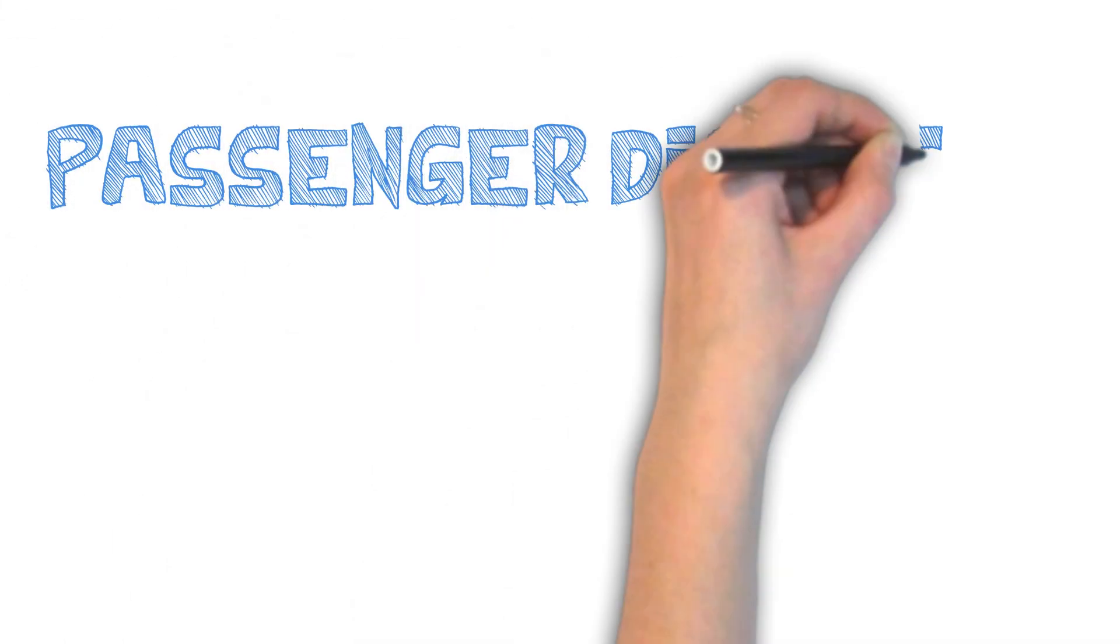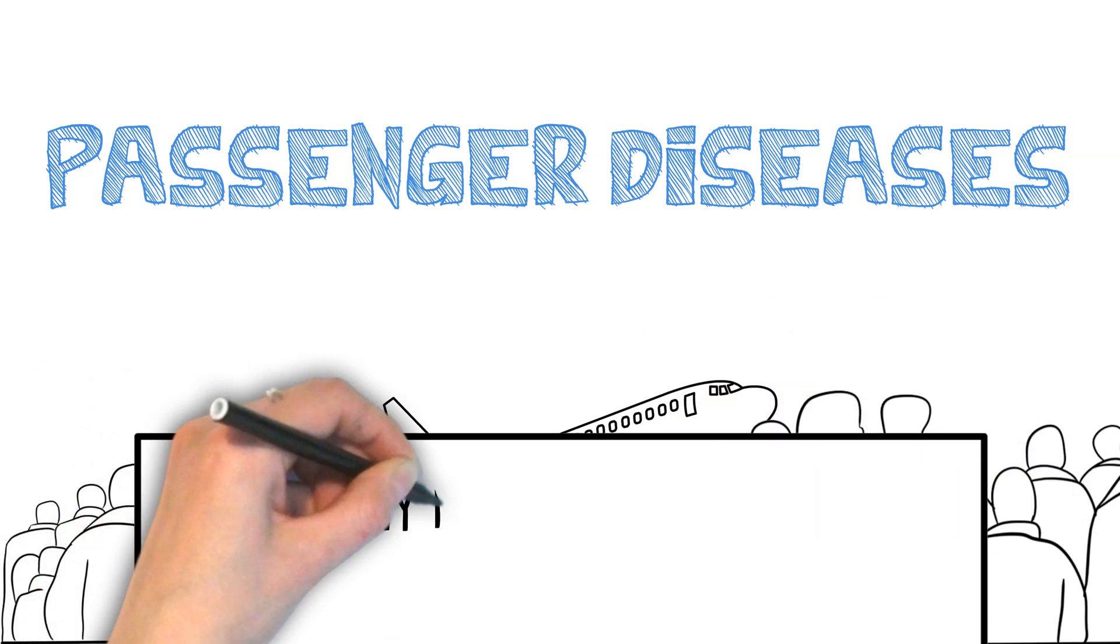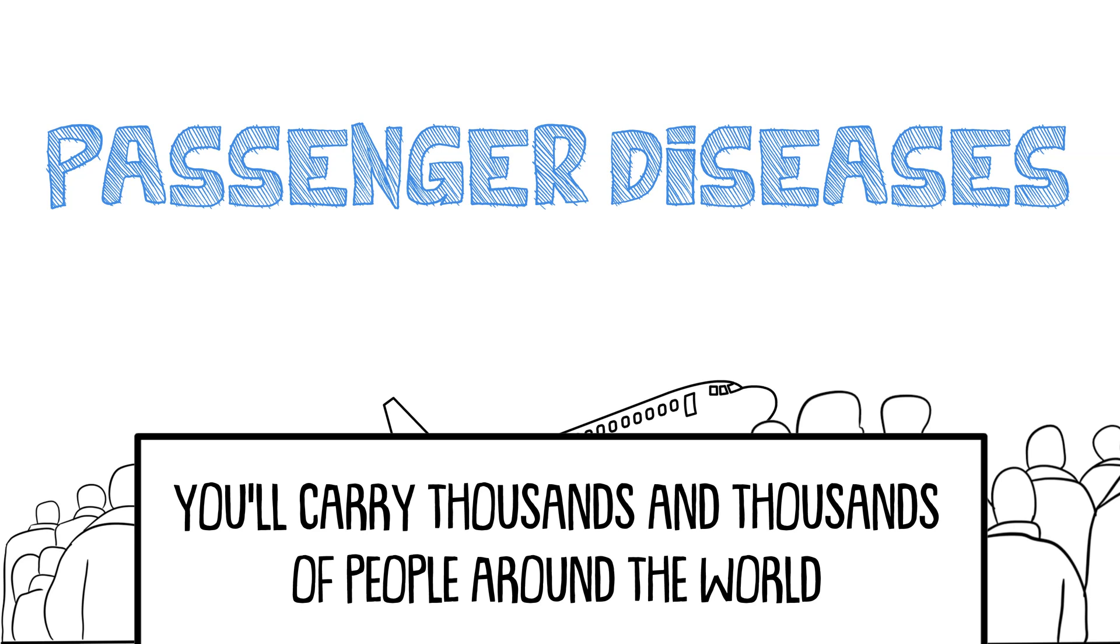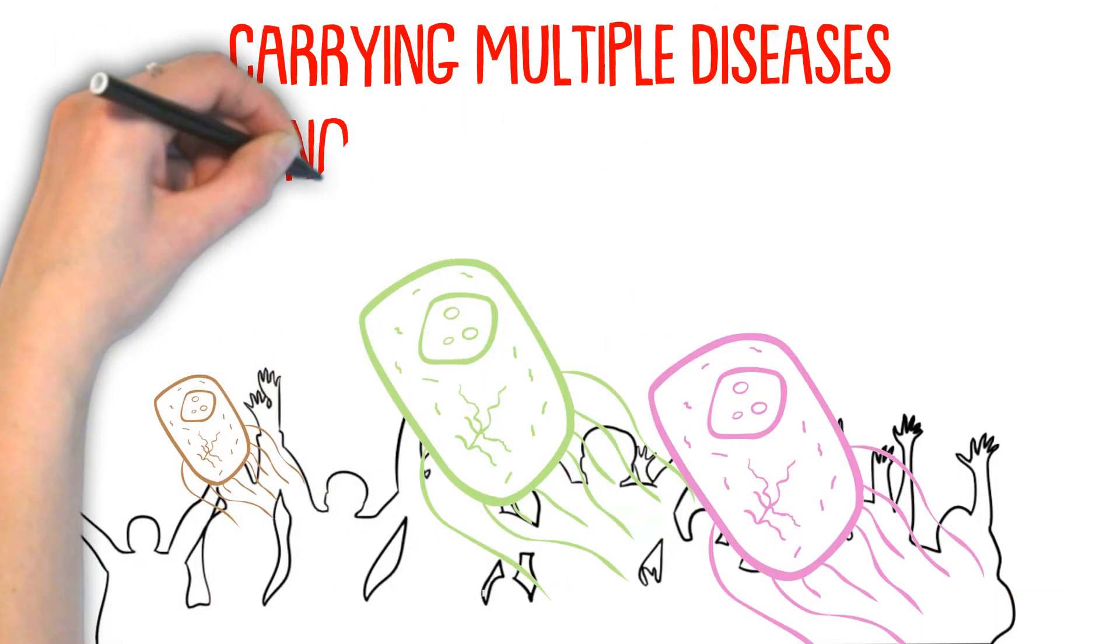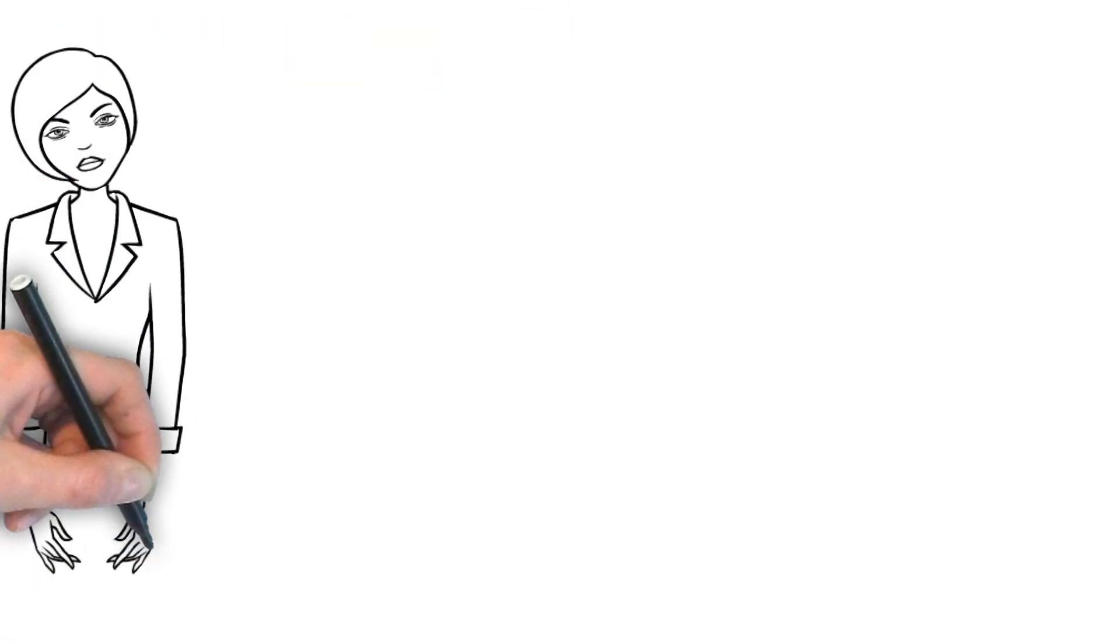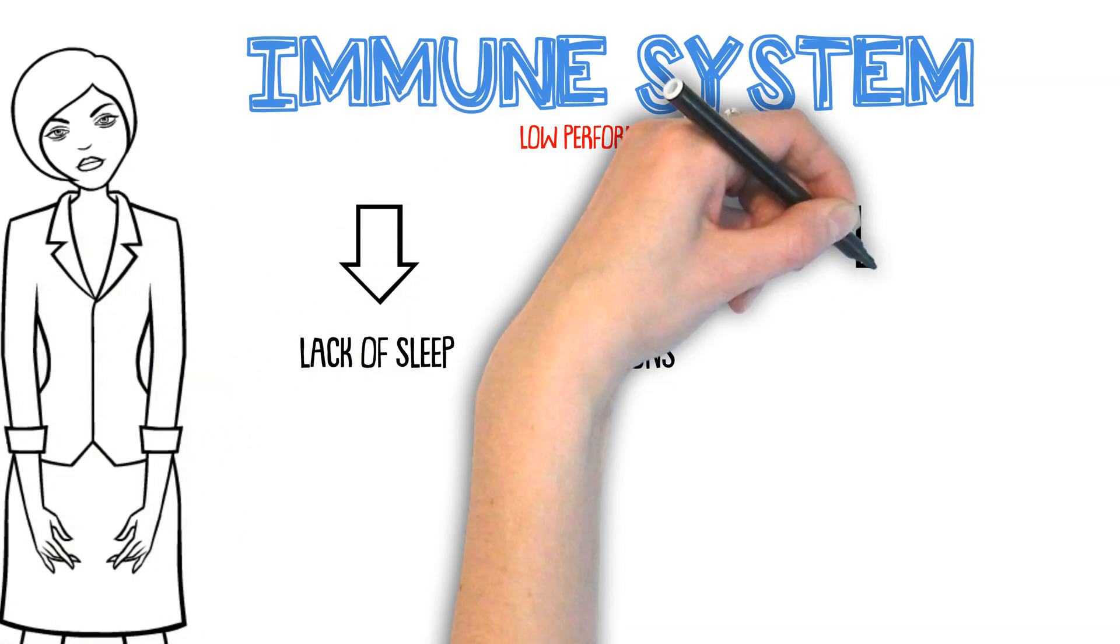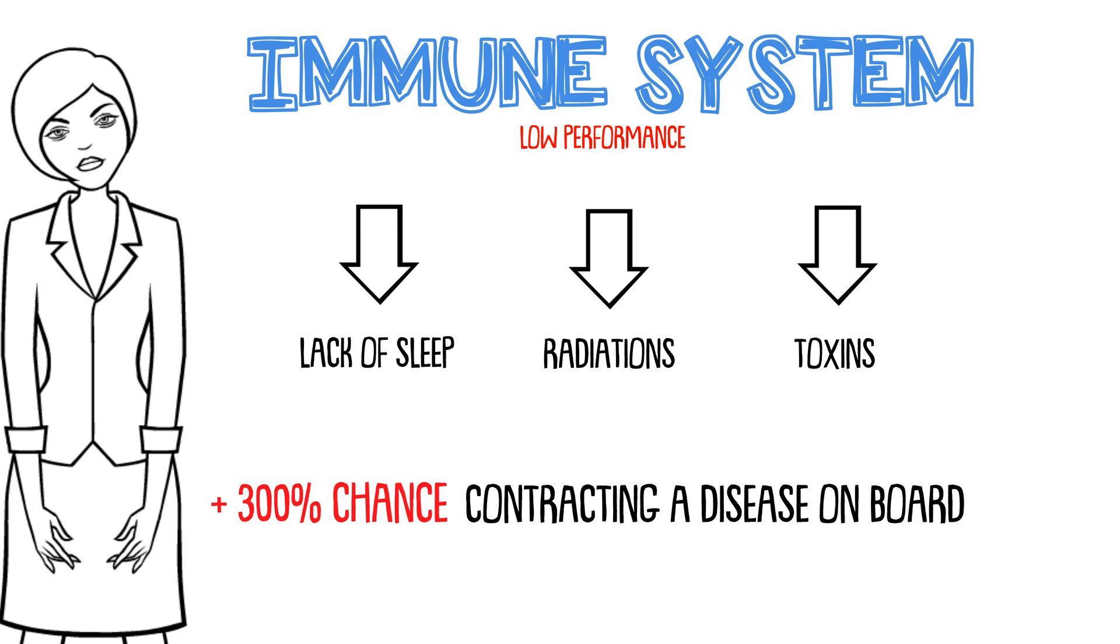Exposure to several diseases passengers could carry on board speaks for itself. As you're working for an airline, you'll be carrying thousands and thousands of passengers from one country to another. Said passengers might be carrying numerous diseases, but not show it. If your immune system is at its lowest performance due to lack of sleep, excessive radiation exposure, and toxin exposure, you could easily pick that disease up. You'll be surprised by the amount of bacteria you can find on your seatbelt alone.